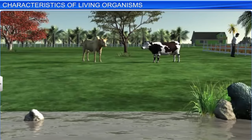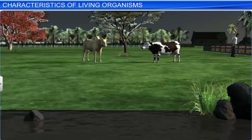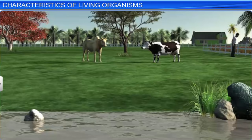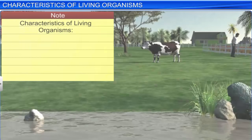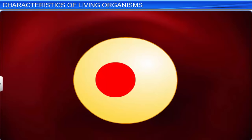The world consists of both the living and the non-living. But how do we segregate the two? We can do so by looking out for certain characteristics associated with living organisms. However, these characteristics can be definitive or non-definitive. One such characteristic is growth. Living organisms, whether multicellular or unicellular, grow due to cell division.